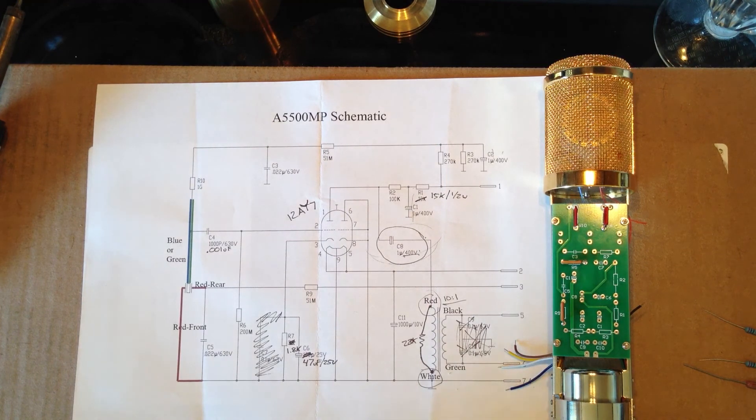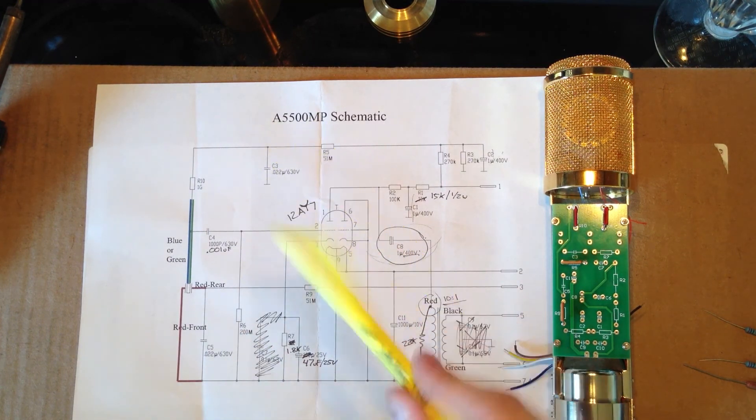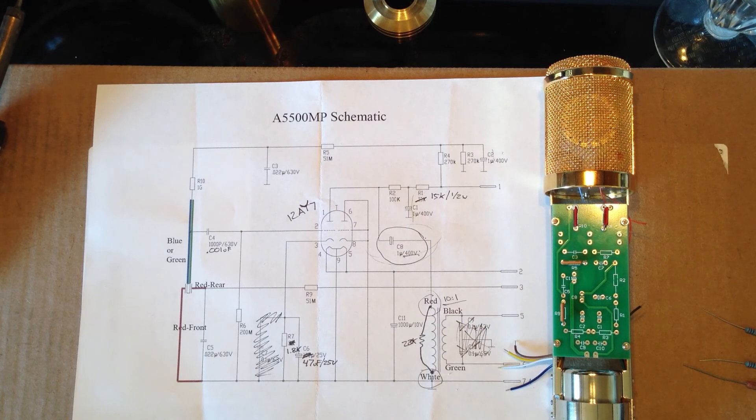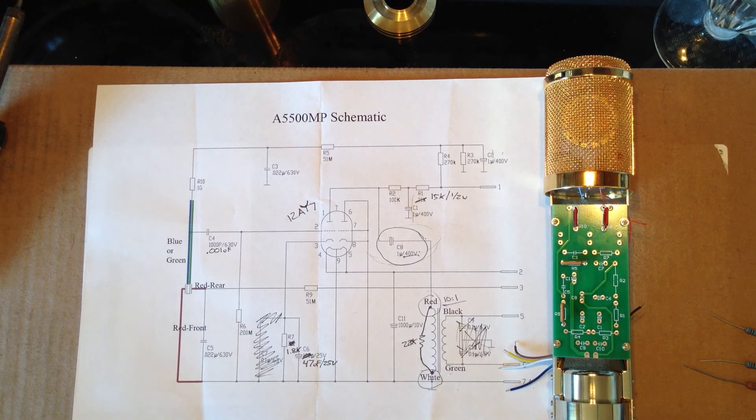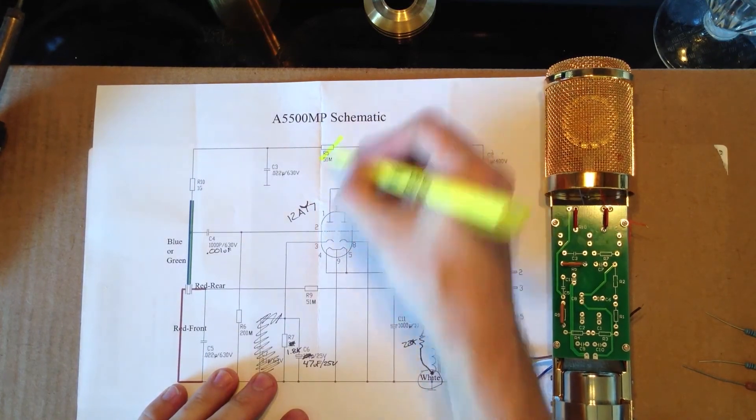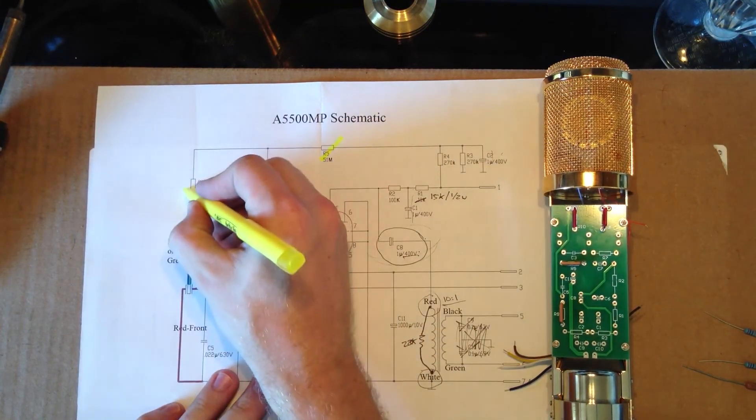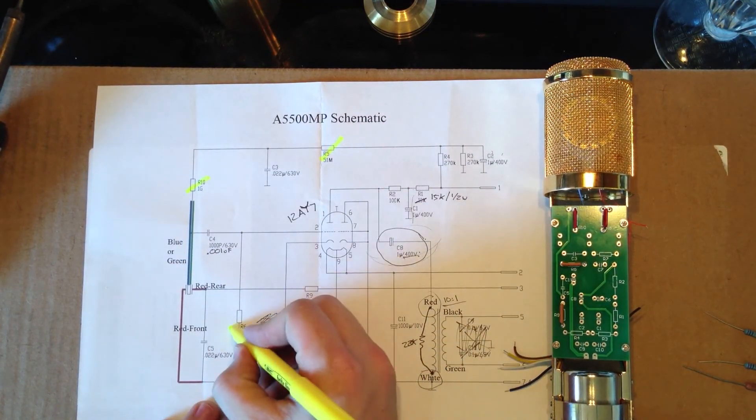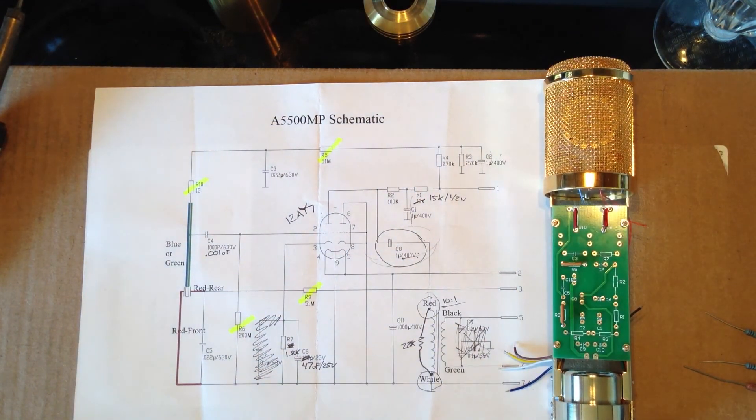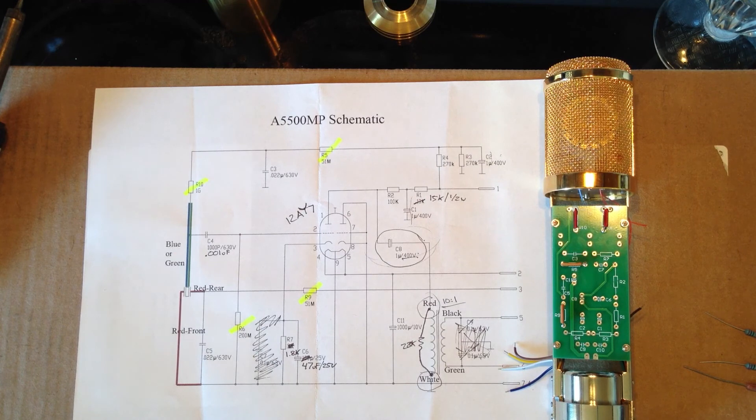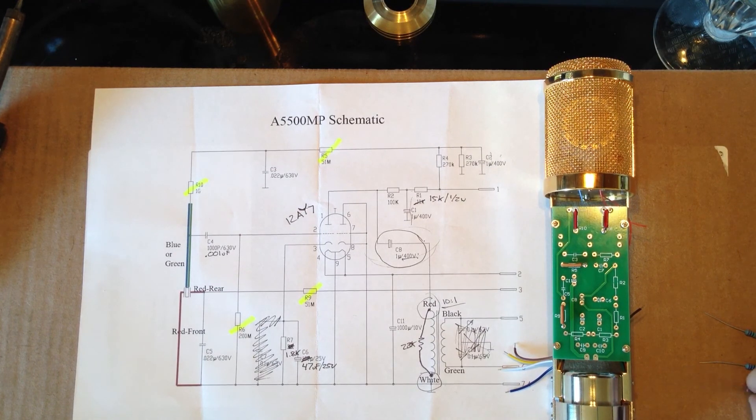Now one thing that I like to do while building these is to take a highlighter and mark off which components I've already placed on the board. So I'm going to go ahead and take my highlighter and highlight R5, R10, R6, and R9. So those are the four resistors that we've so far placed on this mic.